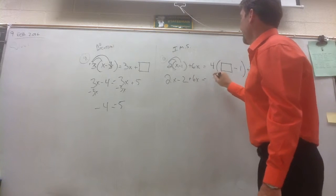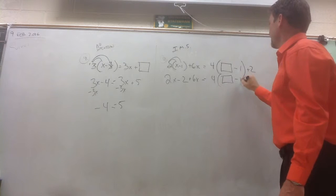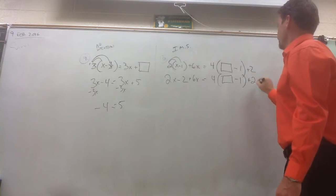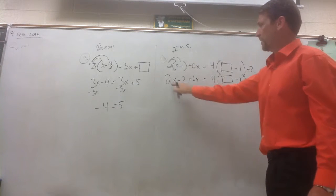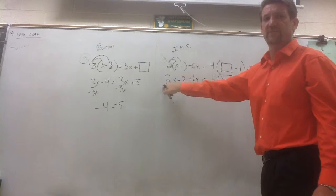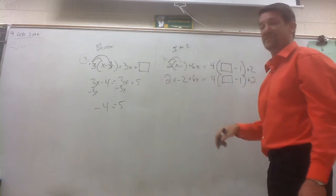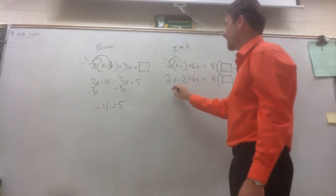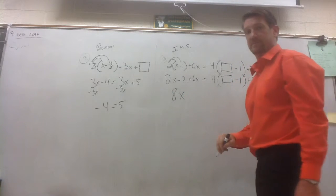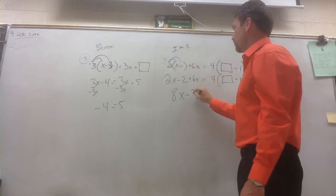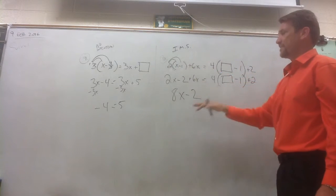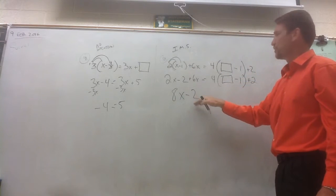And that's going to equal 4 times something minus 1 plus 2. Okay, we can combine these like terms here. I have 2x's and a positive 6x's. When we combine 2x's and a positive 6x's, that gives us 8x. We still have a minus 2. So the left side, this simplifies to 8x minus 2.